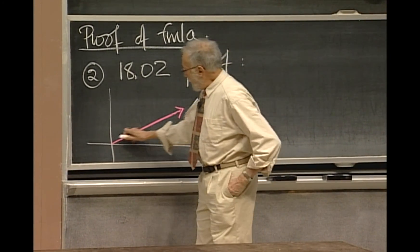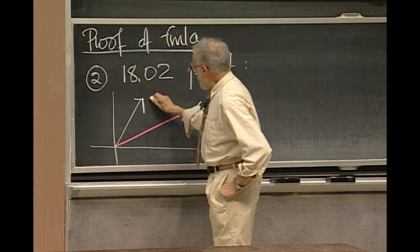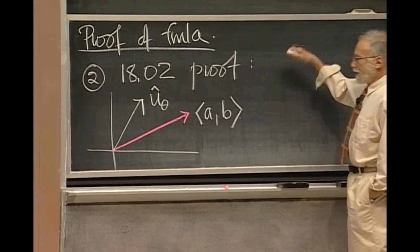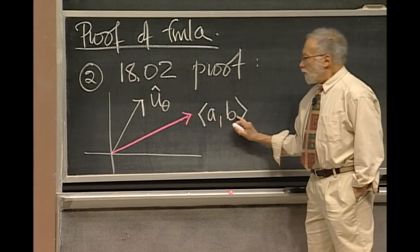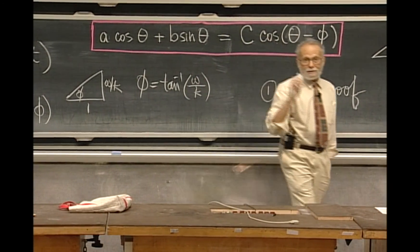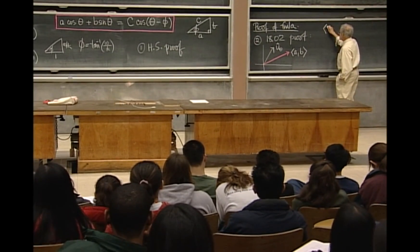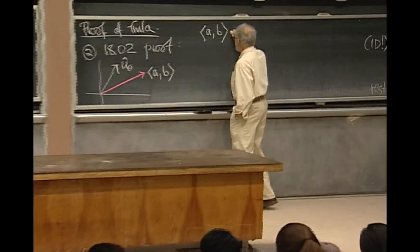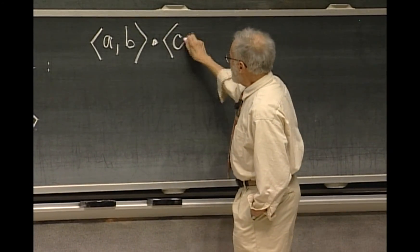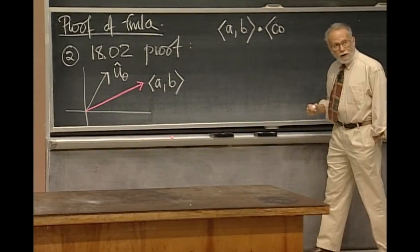Now, there's another vector lurking around. It's the vector, the unit vector whose, I'll write it this way, u because it's a unit vector and θ to indicate that its angle is θ. Now, the reason for doing that is because you see that the left hand side is a dot product of two vectors. The left hand side of the identity is the dot product of the vector ab with the vector whose components are cosine θ and sine θ. That's what I'm calling this unit vector. It's a unit vector because cosine squared plus sine squared is one.